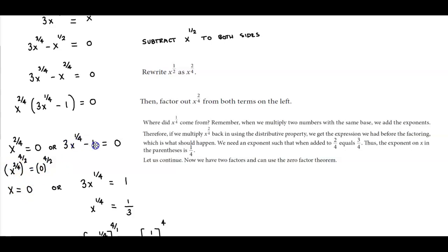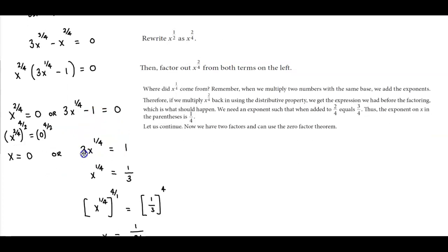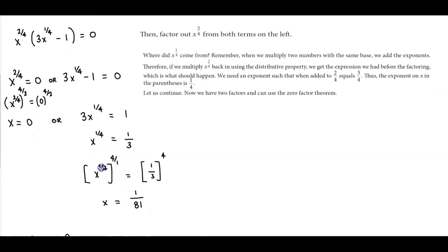3x to the 1 fourth minus 1 equals 0. We're going to add 1 to both sides and then we have to divide both sides by 3. And then in order for us to solve for x, we need to raise it to the reciprocal of the exponent. So the reciprocal of 1 fourth is 4 over 1.